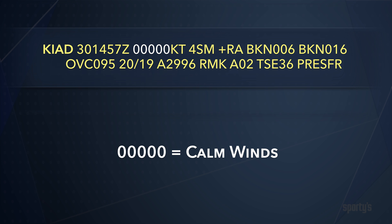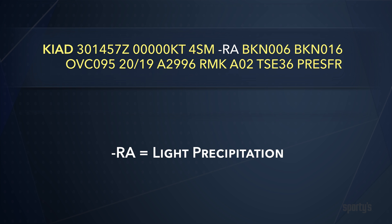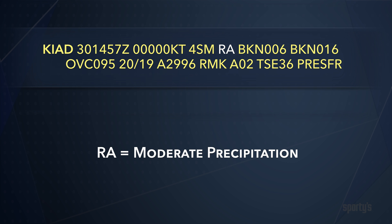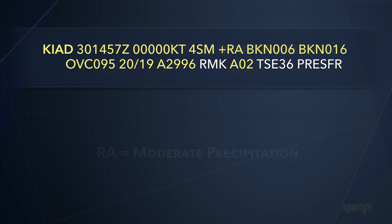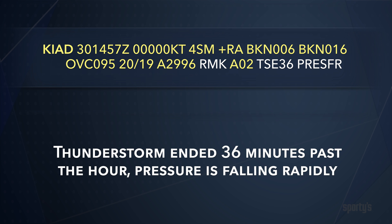Five zeros are used to report calm winds. The plus sign in front of a precipitation contraction means that it's heavy; a minus sign would indicate light; no sign means moderate. Remarks may contain information regarding when a thunderstorm began or ended, or when some other weather phenomenon occurred. Here, a thunderstorm ended at 36 minutes past the hour, and the pressure is falling rapidly.